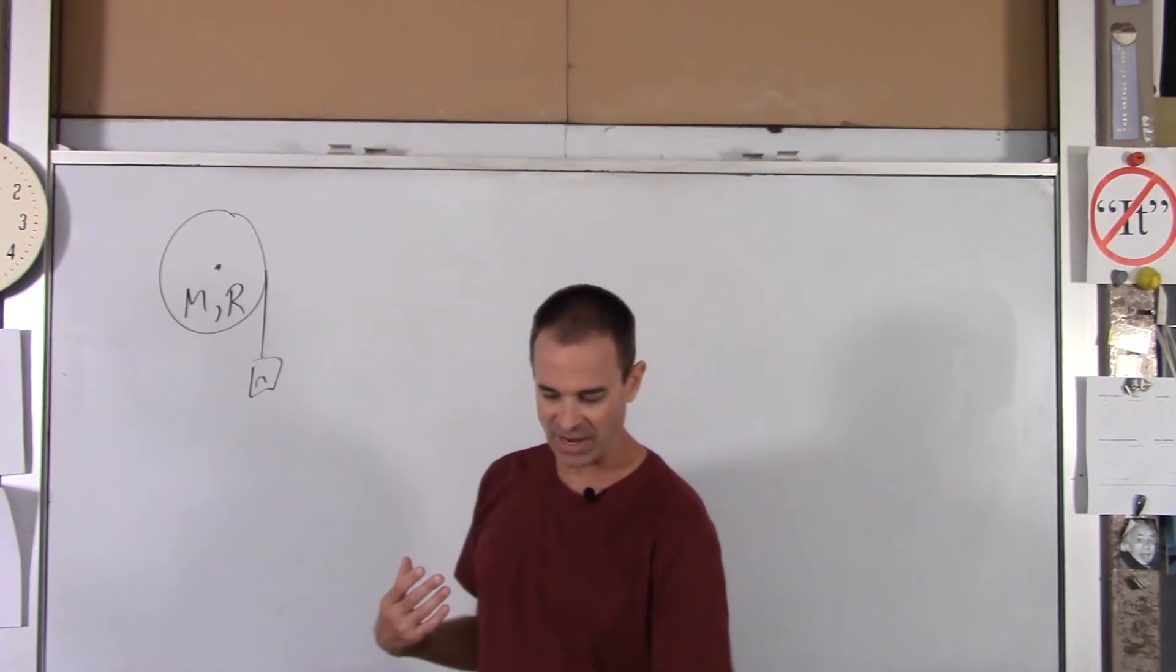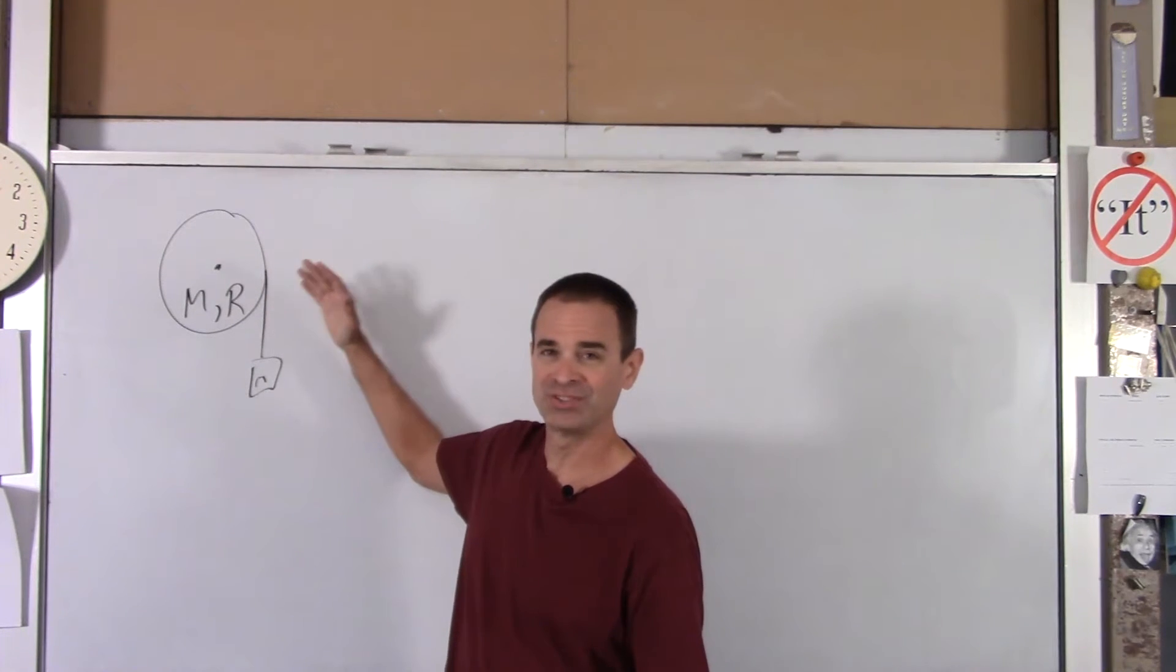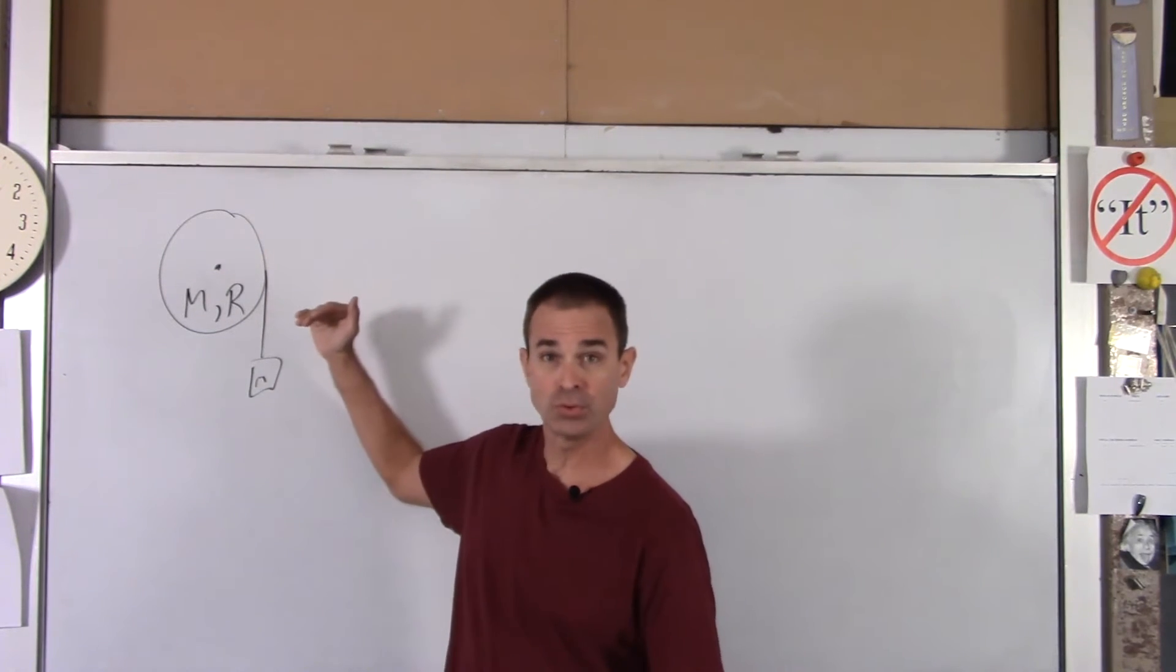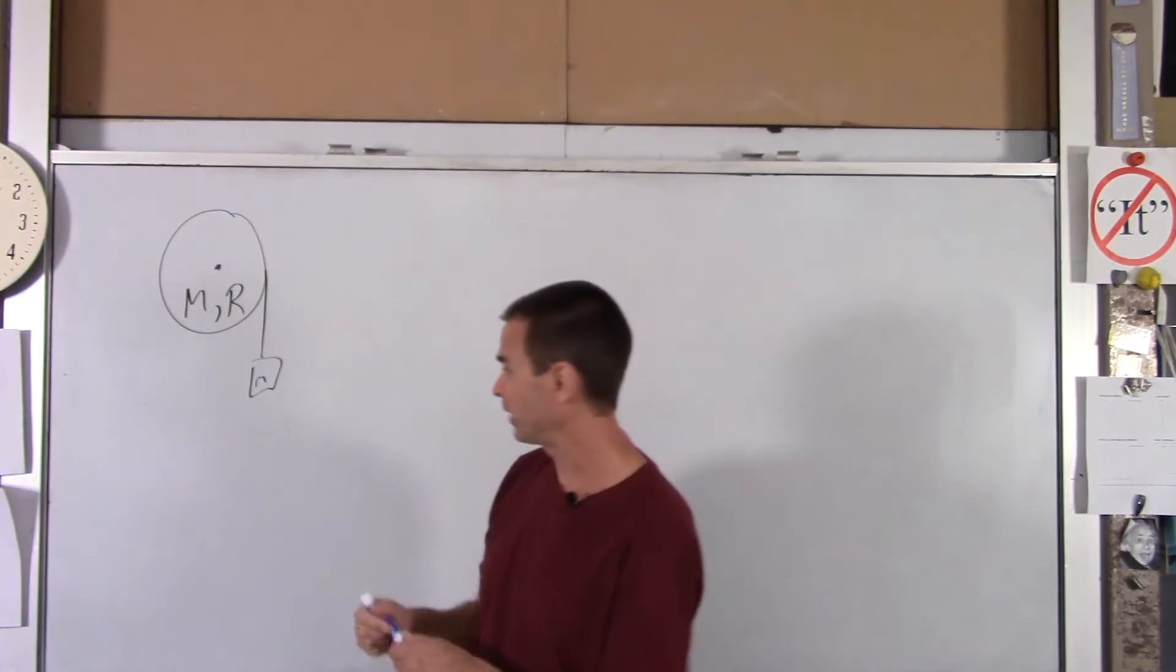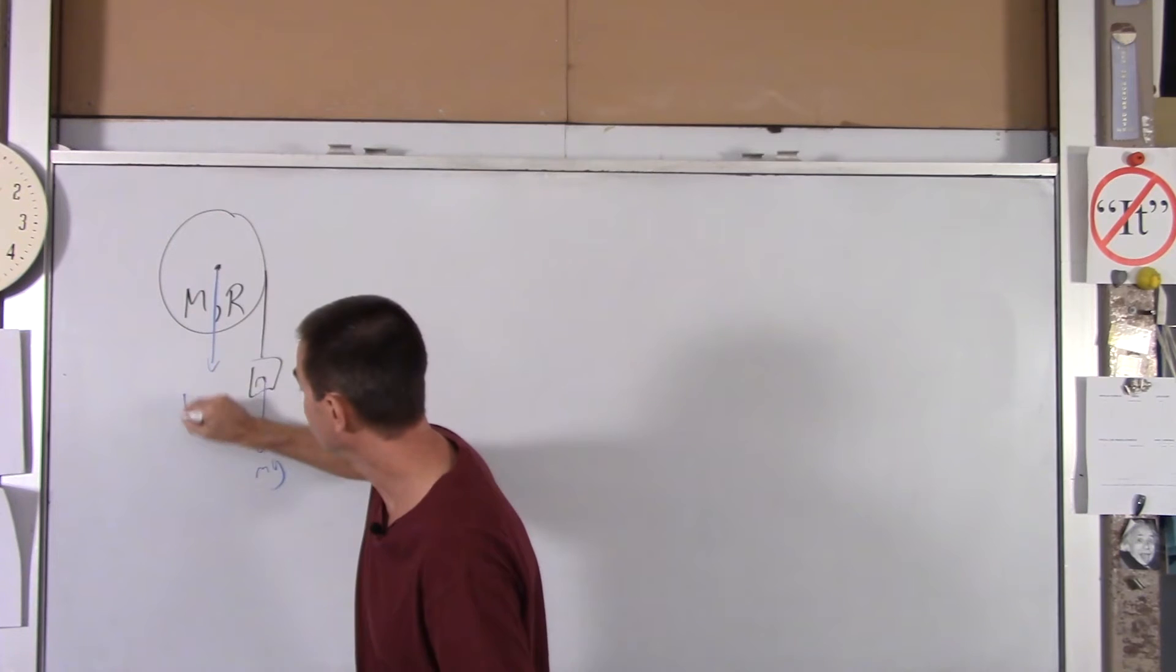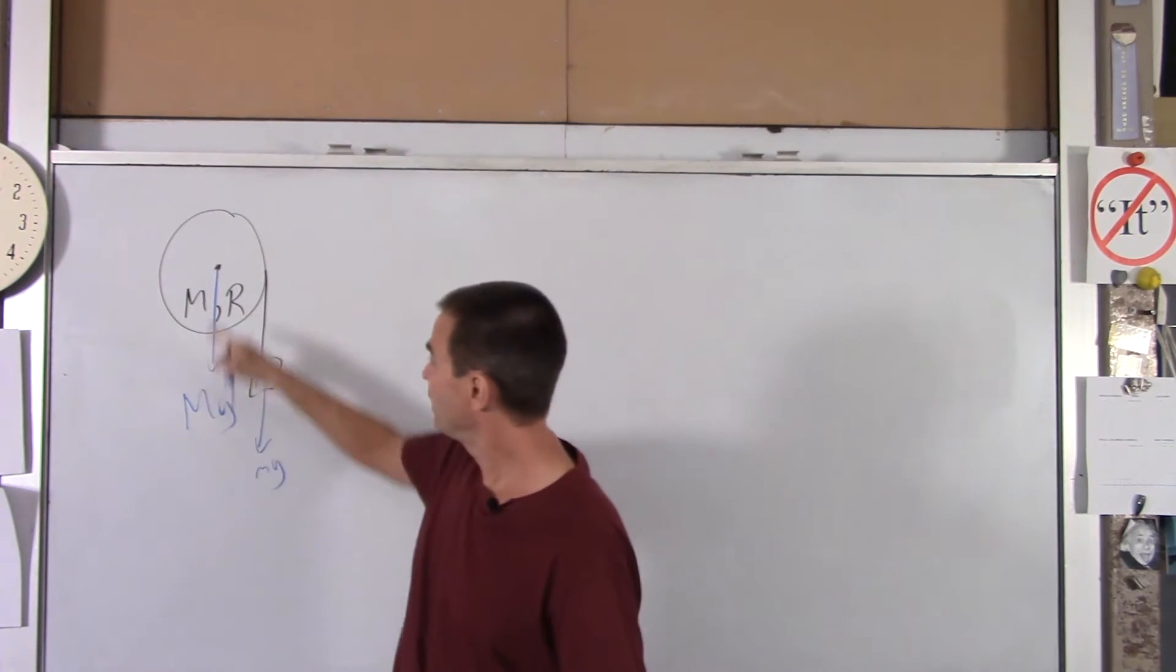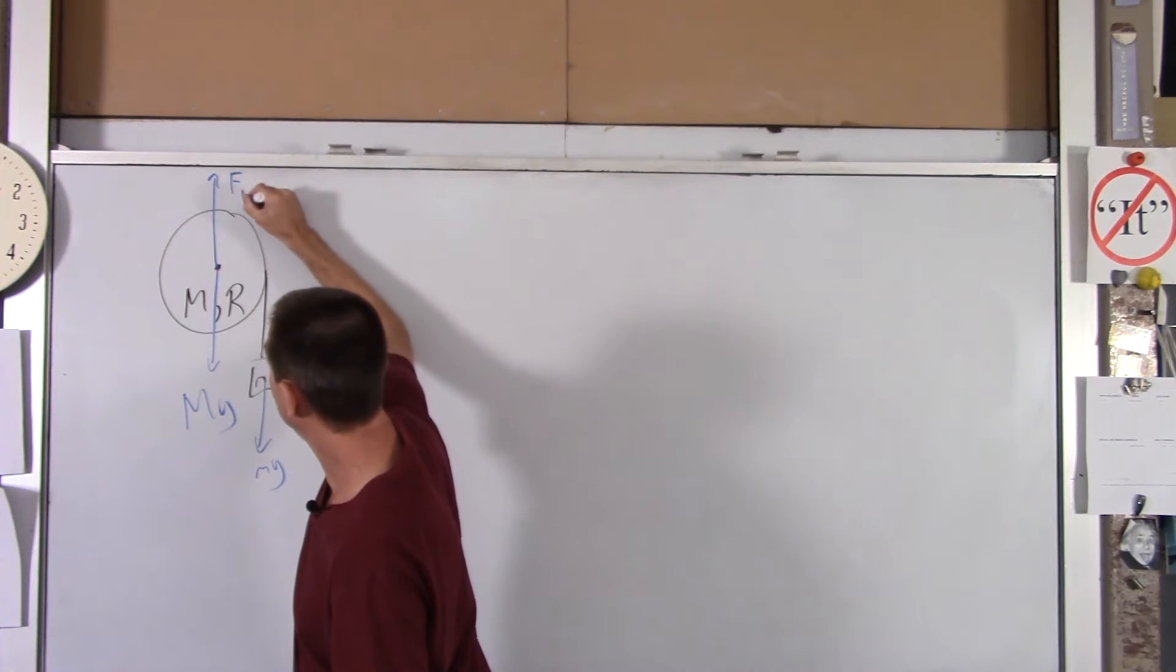So when you look at the entire system, you draw an FBD of all the forces that act external to the system. So for instance, you've got gravity pulling down each block. So I'll draw that. So that's a little mg. And that's big mg. You've got a pin holding this up. So I'll call that F sub p.